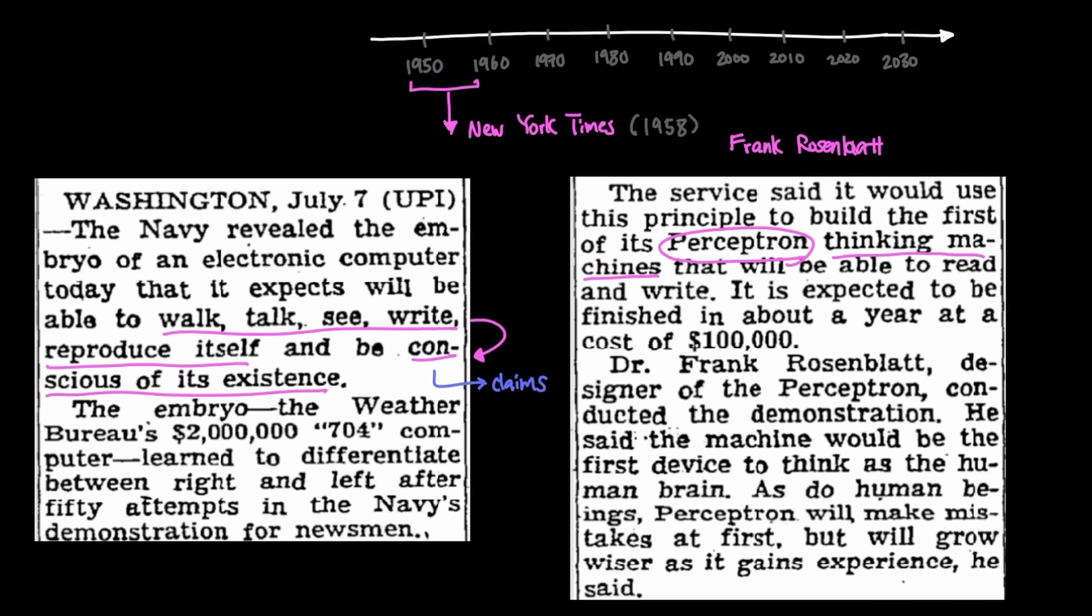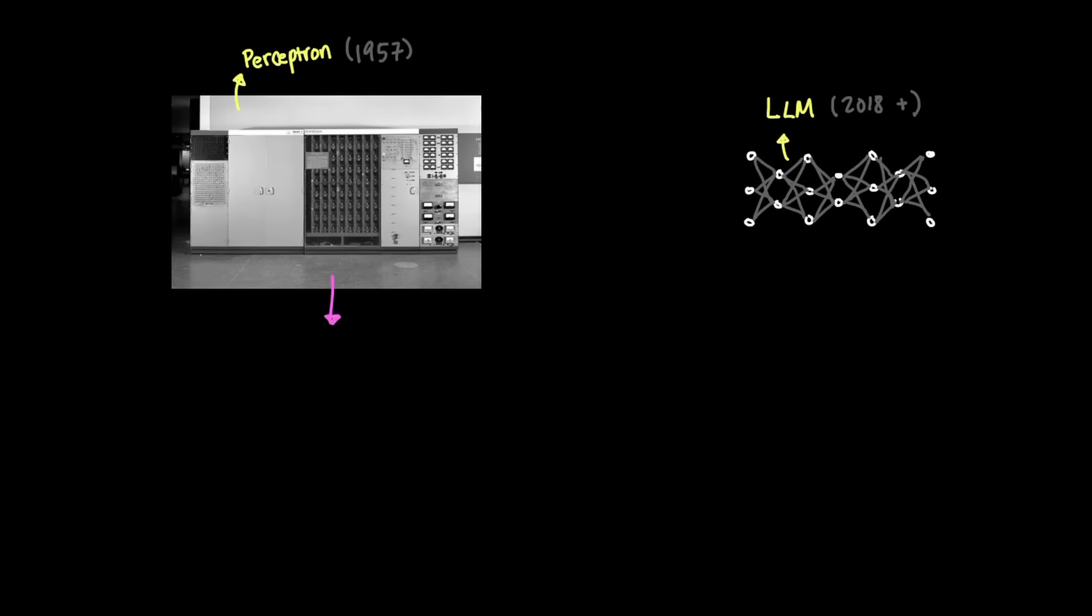Claims like these are not unfamiliar to us today when we look at figures like Sam Altman saying that AGI could be achieved by 2030. So how does Perceptron in 1957 differ from LLMs in 2018 and onwards? Perceptron was a single-layer network that connected inputs and outputs and adjusted its learning to classify a 20x20 image.